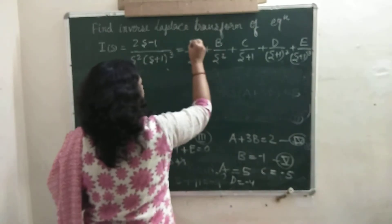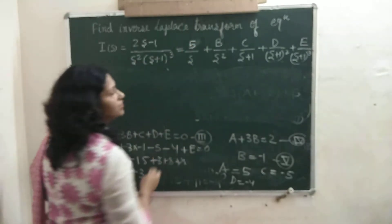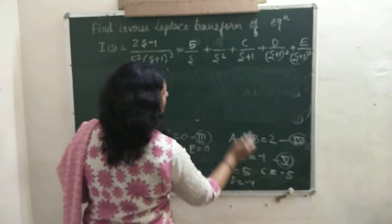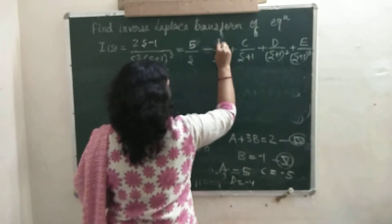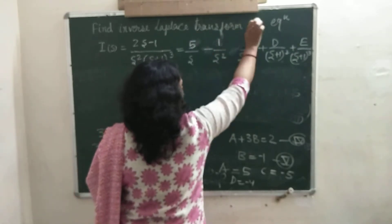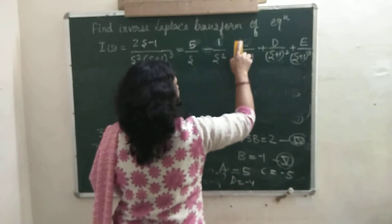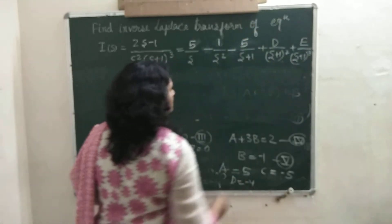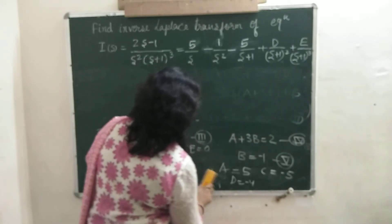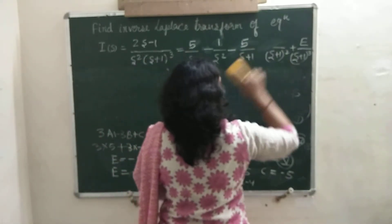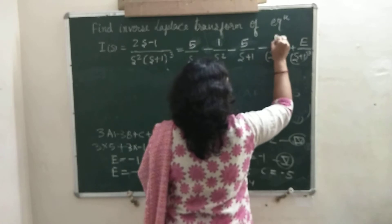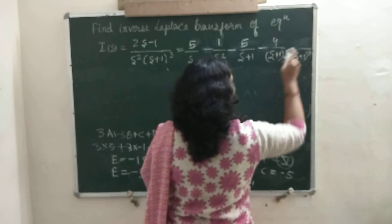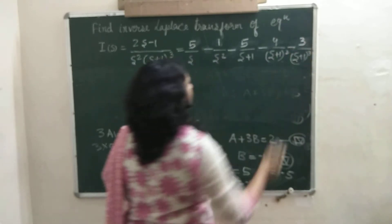Now substituting all values back into the partial fraction equation: A equals 5, B equals minus 1, C equals minus 5, D equals minus 4, and E equals minus 3.